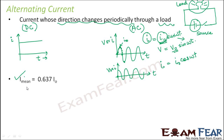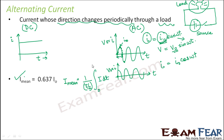I_mean is calculated over half the time period: I_mean = (1 / (T/2)) × ∫₀^(T/2) I dt. We find that there is a relationship between I_mean and I₀, which is: I_mean = 0.637 × I₀.